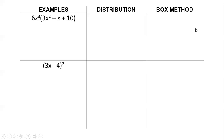Multiplying polynomials. Basically what we're going to do is cover various ways it can look, so we're going to do a bunch of different examples of possible expressions to multiply. Here we have 6x cubed times 3x squared minus x plus 10, so we have a monomial times a trinomial.